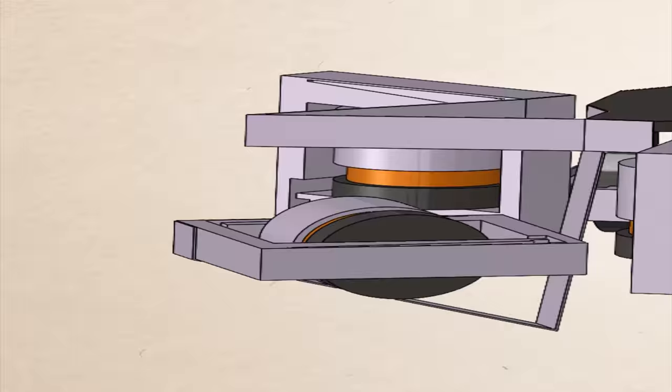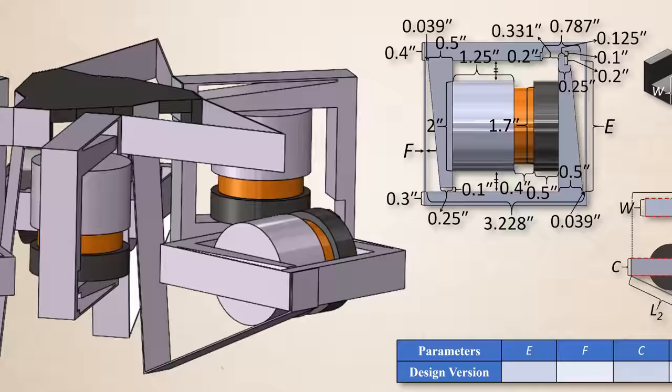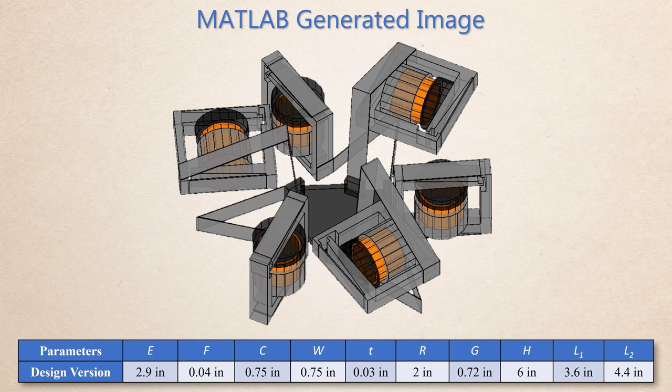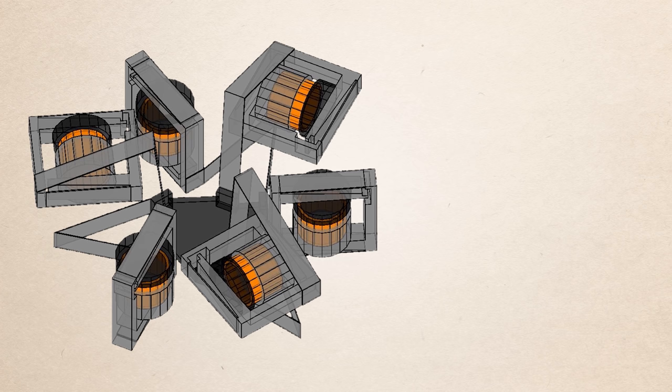A MATLAB tool was created to analytically calculate the performance capabilities of any geometric version of the hex blade design. The geometric features that define the system's flexure topology were parameterized according to the ten independent variables shown here. Once these parameters are specified for a particular design, the MATLAB tool can generate an image of the design so that users are able to visualize what the resulting version looks like for the parameter combination entered.